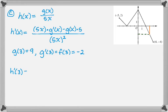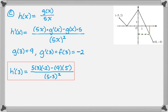And now we can plug in. So h prime of 3 is 5 times 3 times negative 2 minus 9 times 5, and then all over 5 times 3 squared. You could actually stop there, which is probably a good idea, because you might make a mistake with what I'm about to do.